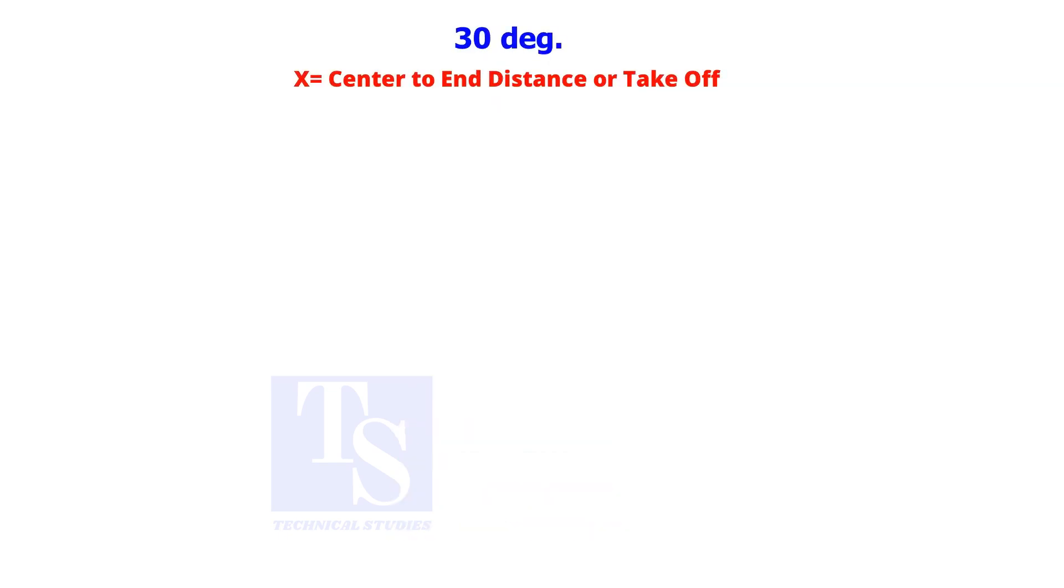To calculate the take-off of a 30 degree long radius elbow, multiply the nominal pipe size by 10.2.